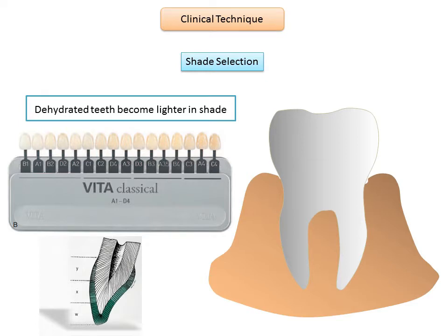Shade selection should be made quickly — within 30 seconds — because of physiological limitations of color receptors in the eye, which make it difficult to distinguish between similar colors after 30 seconds. In complex situations a combination of shades can be used. For example, Y shade corresponds to the cervical region, X shade to the middle region, and W shade to the incisal or occlusal region, which in most cases is lighter than the rest of the tooth.